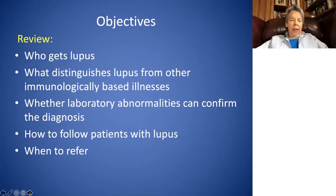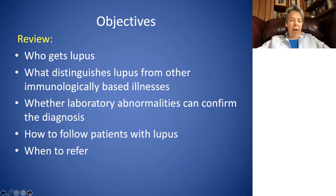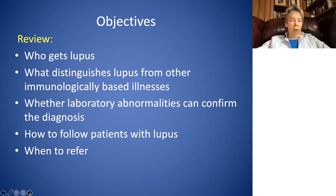The objectives of this talk are to review who gets lupus, what distinguishes lupus from other immunologically-based illnesses, whether laboratory abnormalities can confirm this diagnosis, and how to follow patients with lupus. And finally, some advice about when to refer. Whenever I say lupus, it's a short name for systemic lupus erythematosus, but that's a mouthful, so we'll stick with lupus.